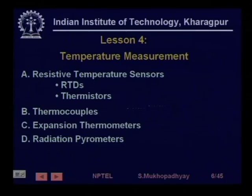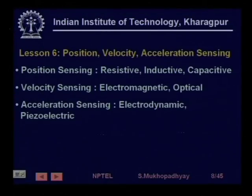We also looked at typical sensor specifications of industrial sensors. Then, having taken a look at an abstract sensor, we started looking at individual sensors for the typical process variables measured and controlled in an industrial environment, like temperature. We talked about various kinds of temperature sensors and their signal processing circuits, then pressure, force, and torque sensors — low pressure, high pressure, force measurement, strain gauges, torque measurement — and then position, velocity, and acceleration sensing.